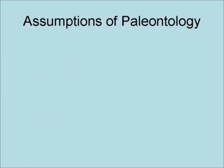The following are the main assumptions of establishment paleontology. Absolute naturalism, which allows only totally natural causes to be considered for everything, and refuses any consideration of supernatural causes. Based on this, they also assume that the Bible is wrong, because the biblical account has supernatural causes, contrary to the dictates of absolute naturalism.